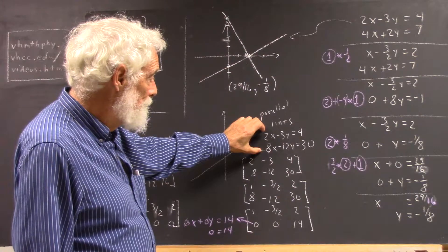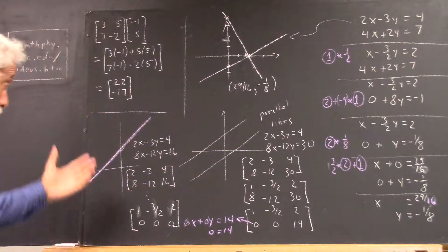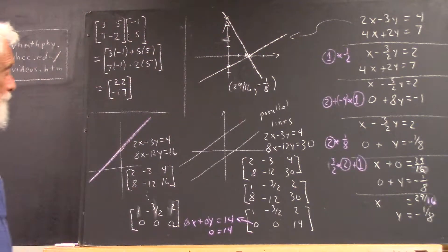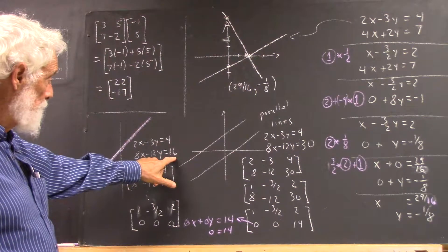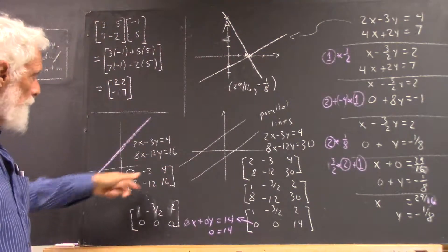And that will always be the case, except when it isn't, which would be like over here, so let's illustrate this. Same situation. I've got the same numbers on the left-hand side, but I put a 16 here instead of a 30. So here's my matrix.